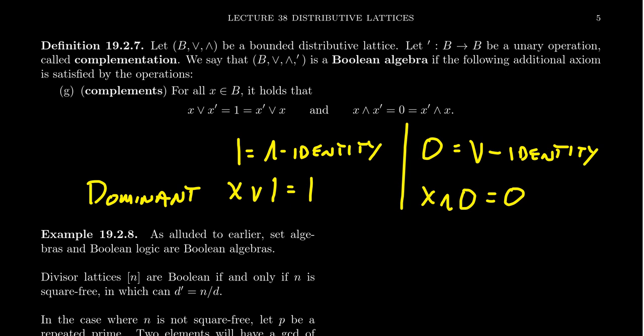You don't even need the distributive laws to show this — we can prove it using absorption, since bounded lattices have absorption even without the distributive law. This still gives you the condition that the identity of one operation is a dominant element of the other. Getting back to complements: a complement doesn't give you back the identity like an inverse does. The complement gives you the dominant element. The dominant element of join is 1, the identity is 0. The dominant element of meet is 0, and the identity is 1. So the complement is sort of like the opposite of an inverse.